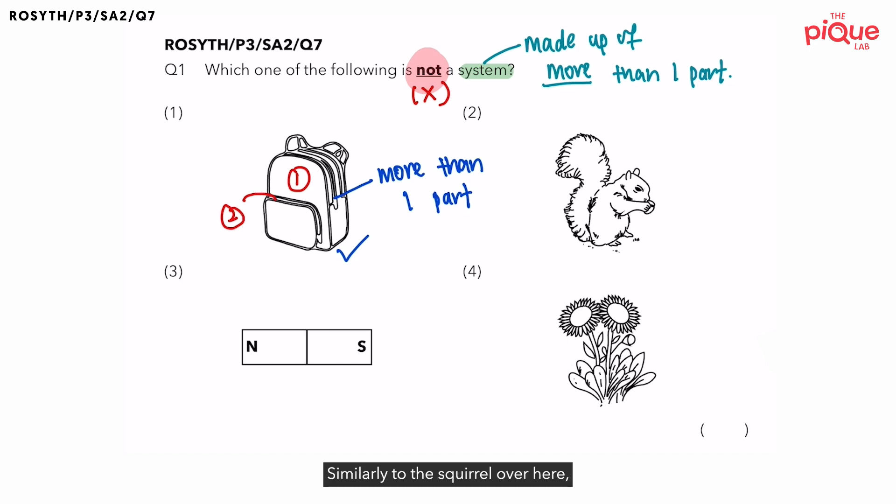Similarly to the squirrel over here, the squirrel is also a living thing, so it also must have the five body systems in it. So if the squirrel has the five different body systems, can you consider squirrel as a system? Yes, this is because it is made up of more than one part. Since squirrel is a system, I will give squirrel a tick. Now let's move on to option 3.